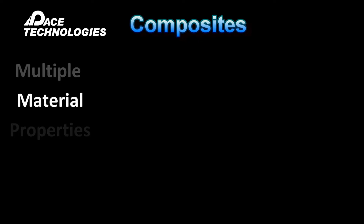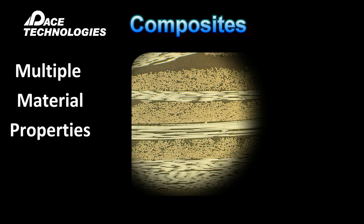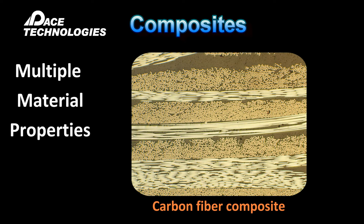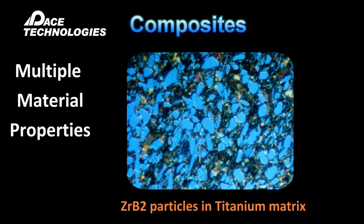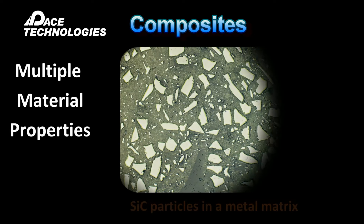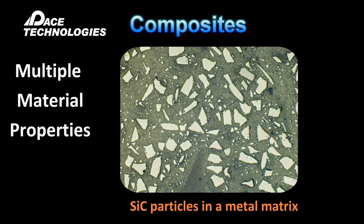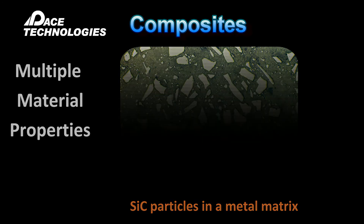Composites are engineered materials which contain fillers in a matrix. Common fillers include ceramic or graphite particles and carbon and ceramic fibers. These fillers are encased or cast into a polymer, metal, or ceramic matrix. Metallographic analysis of composites includes analyzing orientation and distribution of these fillers, voids, and other defects.